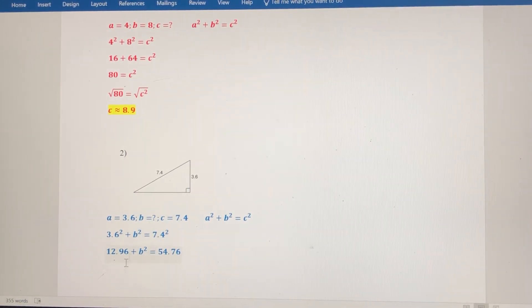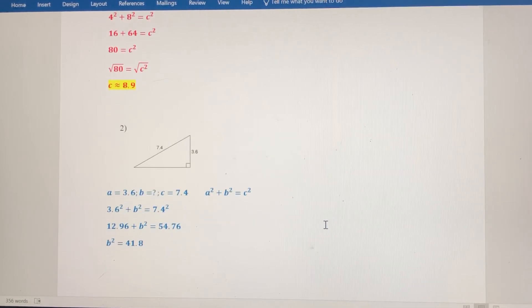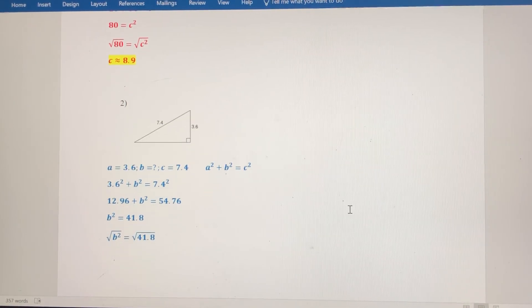Now, I need to subtract 12.96 from both sides. So b² then is going to be equal to 41.8. Again, remember I'm solving for b, not for b². So I want to take the square root of both sides, and we're going to round to the nearest tenth again. So b is approximately 6.5.